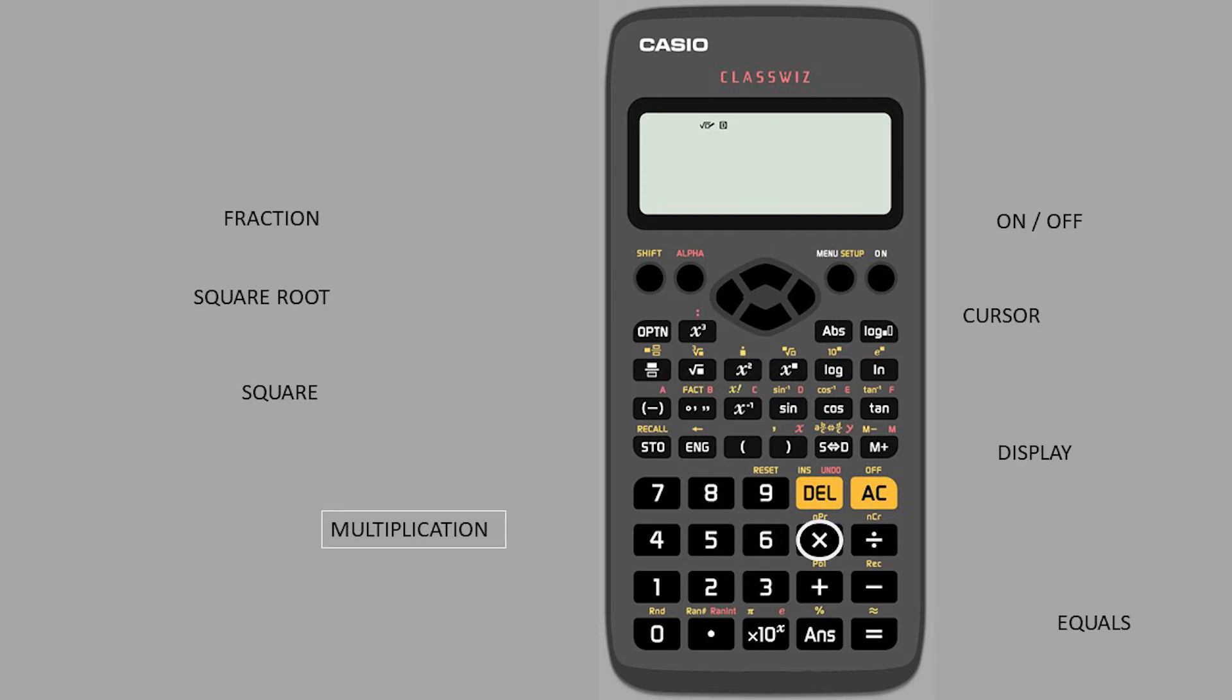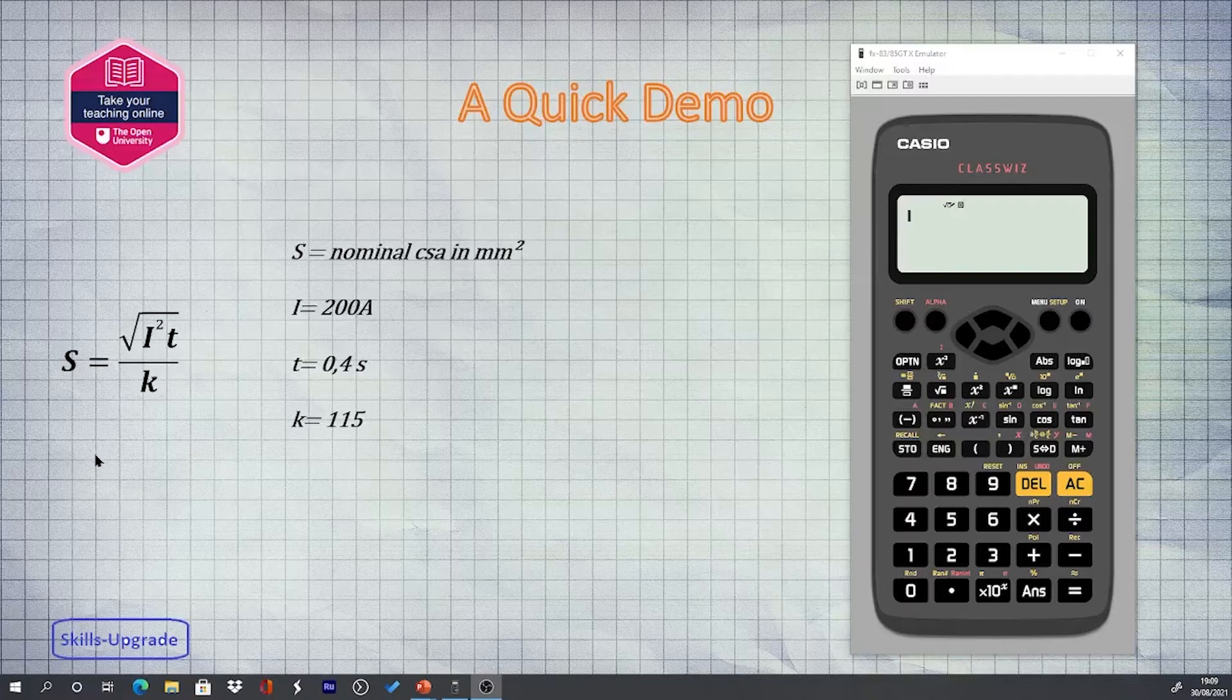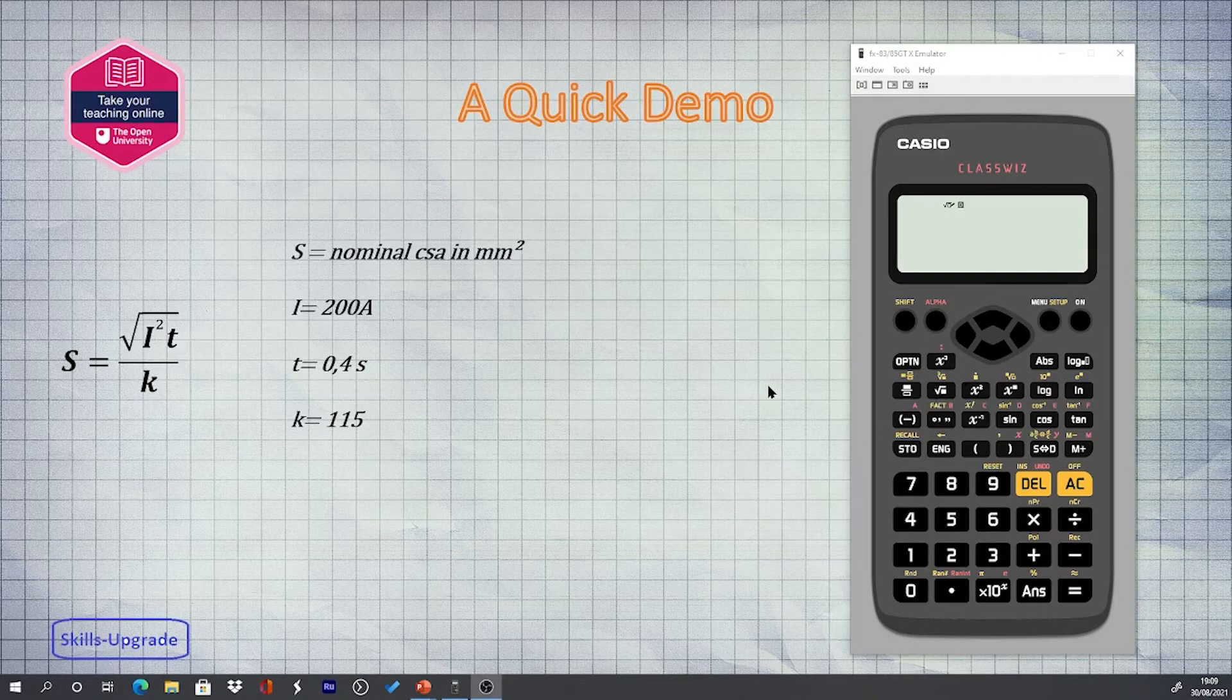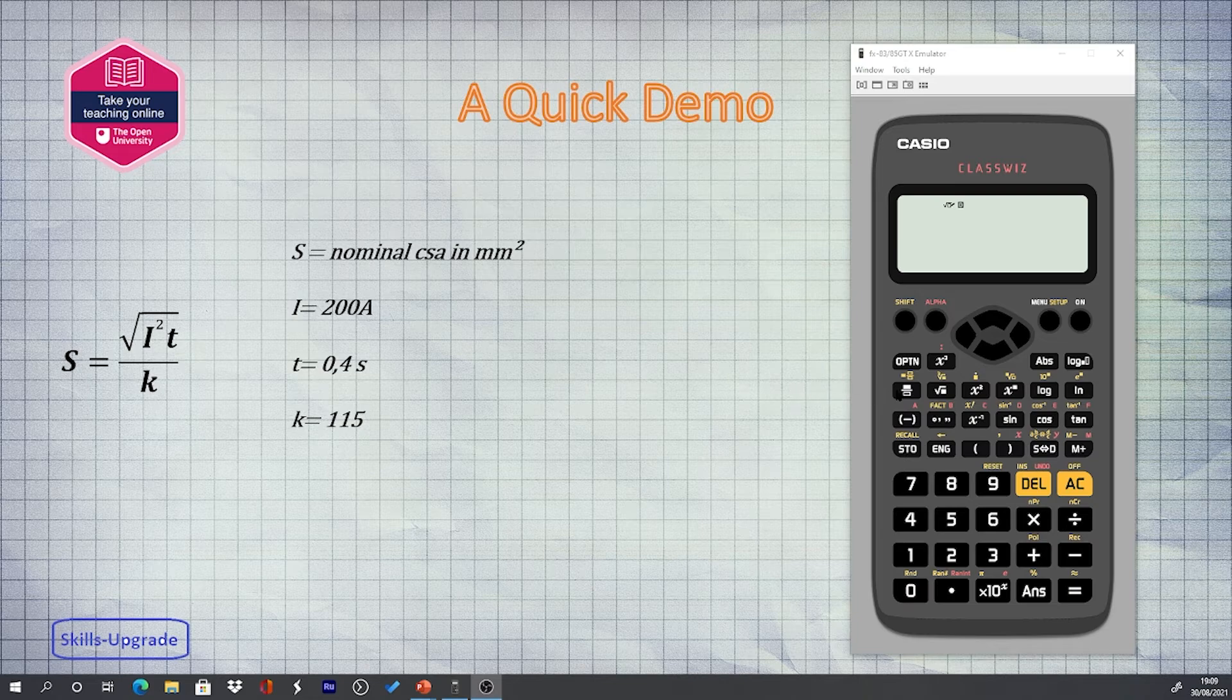This is a demonstration on how to enter the values for the adiabatic equation. The equation consists of a top line with two values and a bottom line.